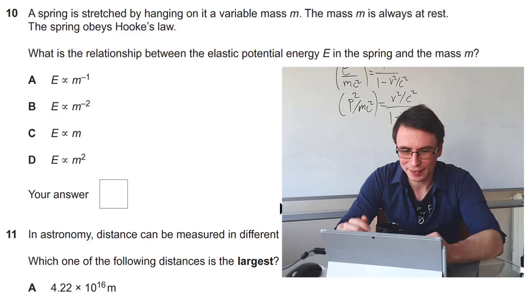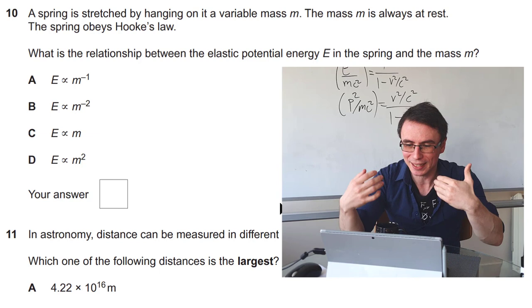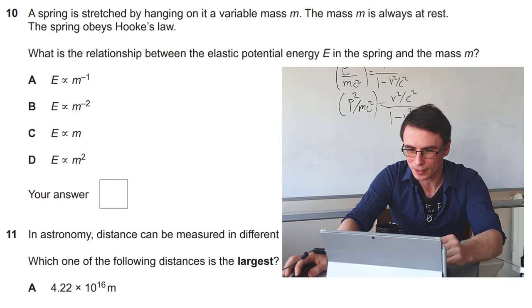Next one about the stretching of a spring. I really like this question because it involves manipulating a couple of different equations to try and get the relationship between the elastic potential energy and the mass that is hanging on the spring. Let's see how it does. The correct answer is that E is proportional to M squared. Let's see if it's going to get it and it's computing.